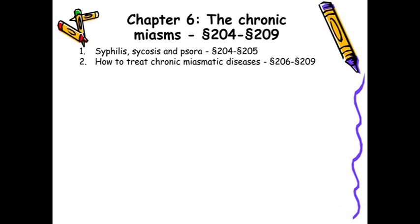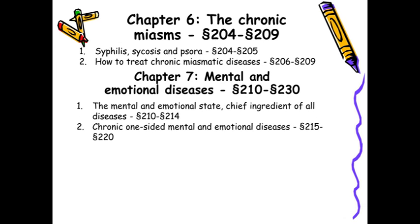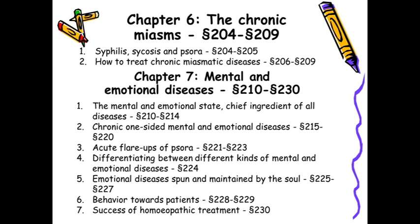The seventh chapter covers mental and emotional diseases. The mental and emotional state is the chief ingredient of all diseases. In the first five aphorisms, Hahnemann has emphasized that the most important symptoms are the symptoms of mind and emotion — and that is what today's psychiatry is understanding, and what we homeopathically have been telling from the time of Hahnemann. Chronic one-sided mental and emotional diseases are described in aphorisms 215 to 220. Then acute flare-ups of psora, aphorisms 221 to 223.